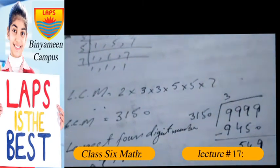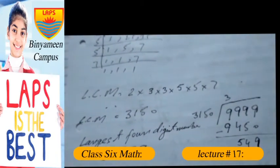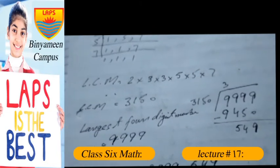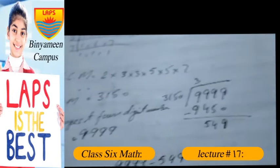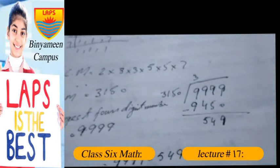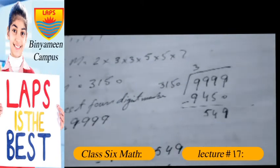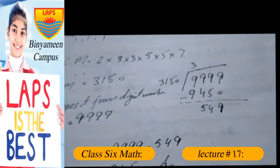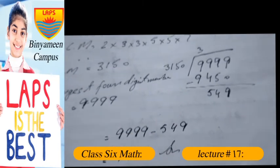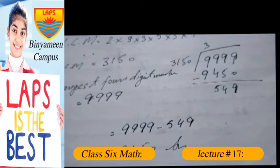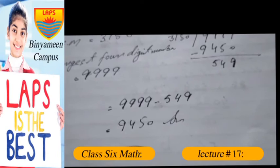LCM equals 2 multiplied by 3 multiplied by 3 multiplied by 5 multiplied by 5 multiplied by 7. The LCM of these numbers is 3150. We divide 3150 into the largest four-digit number 9999, so remainder is 549. Now we subtract: 9999 subtract 549. The answer to this question is 9450.